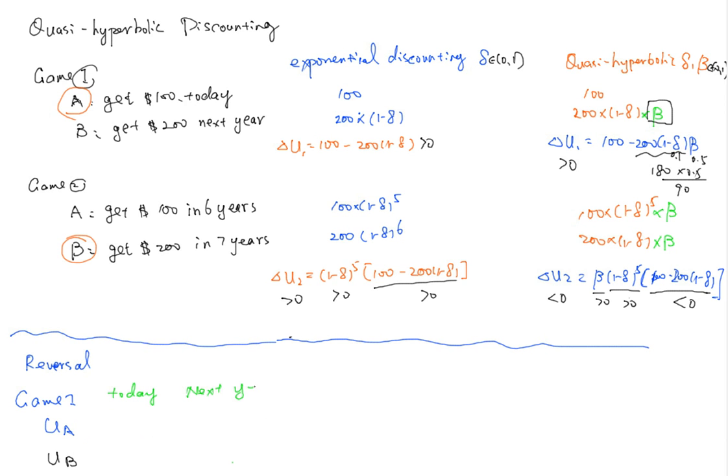Let's compare the choice utility of today and the utility of next year. To do today you got 100 and tomorrow you got 200 times 1 minus delta times beta.